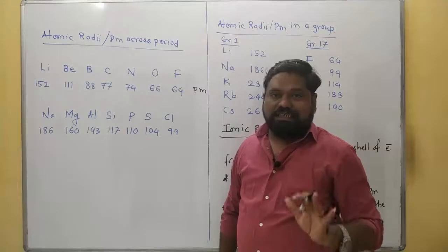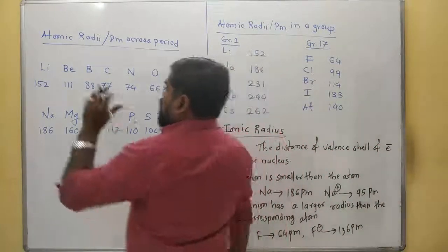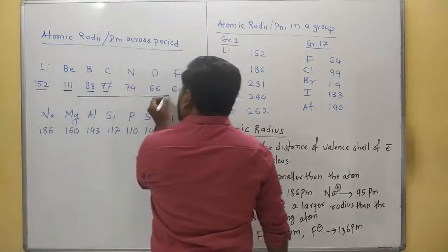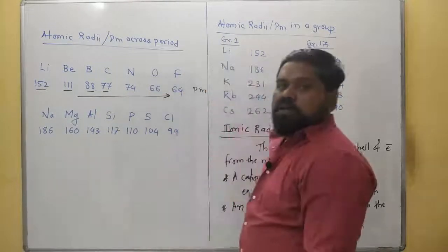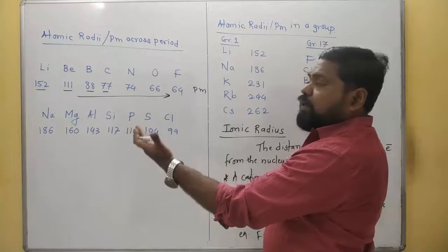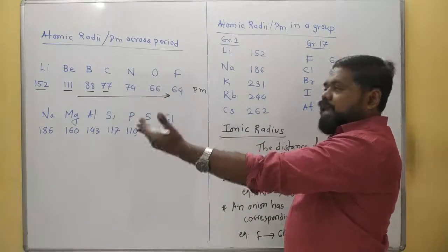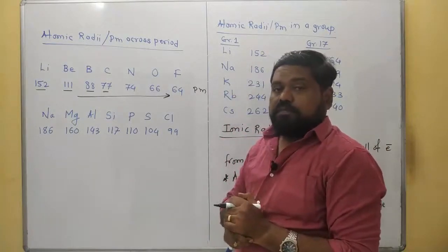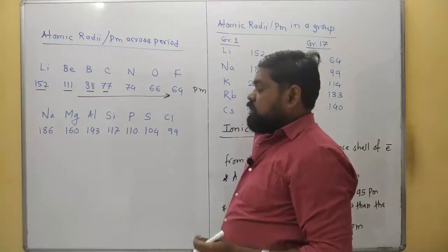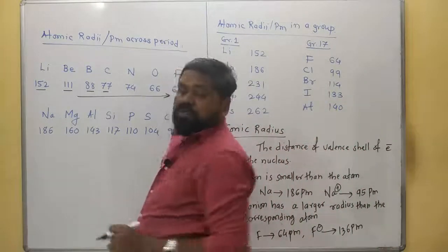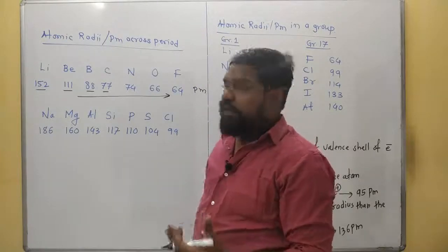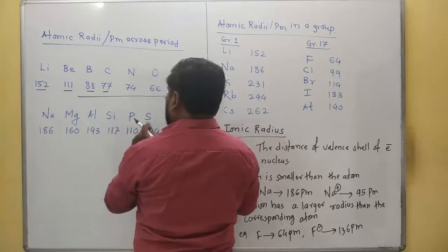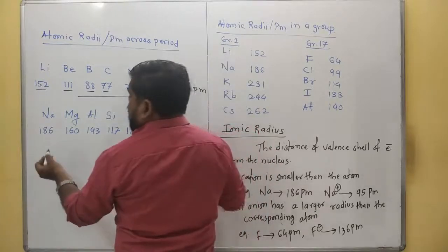For lithium the value is 152, and then values go on decreasing as we move from left to right across the period. From lithium, beryllium, boron, carbon — moving left to right — atomic radii go on decreasing. Now let's talk about sodium, magnesium, silicon, phosphorous, sulfur, chlorine. We have the configuration 2,8,1 for sodium.